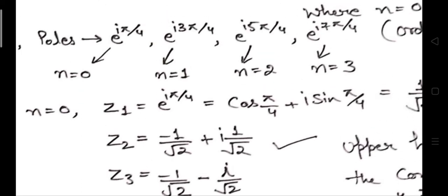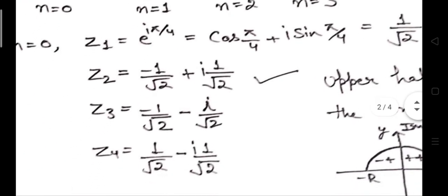To simplify and find which quadrant each pole lies in, we write e to the power iota theta as cos theta plus iota sin theta. For n equals 0, this gives e to the power iota pi by 4, and substituting cos(pi/4) and sin(pi/4) gives us z1. Similarly, e to the power iota 3pi by 4 gives us z2 by the same simplification of trigonometric values.